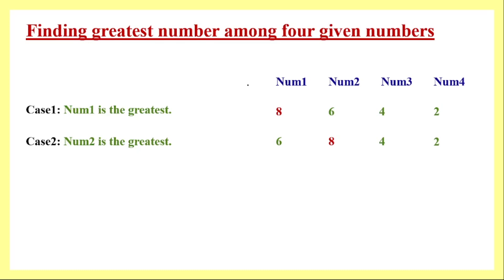Case two is when number two is the greatest. Here, number two is greater than number three and number four, but it is less than number one. We don't need to check whether number two is greater than number one, because if number two was less than number one, it would have already satisfied case one. So for case two, we only check whether number two is greater than number three and number four. If satisfied, number two is the greatest.